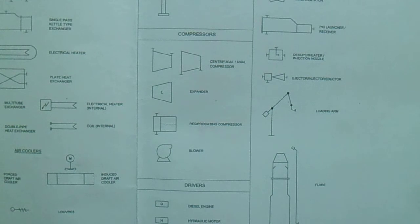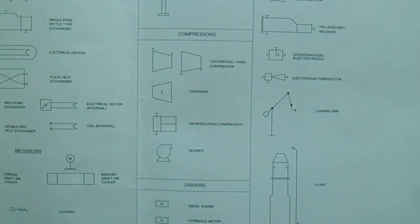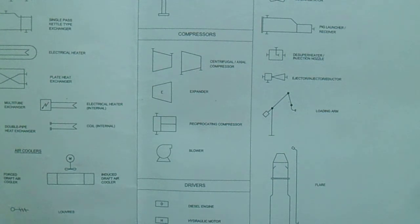That's all the equipment symbols. These are all the equipment symbols you will see in the P&ID — piping and instrumentation diagram. Thanks for watching guys. I hope you learned about these legend sheet equipment symbols. Don't forget to subscribe, and leave a comment if you have any questions. Have a nice day, bye!